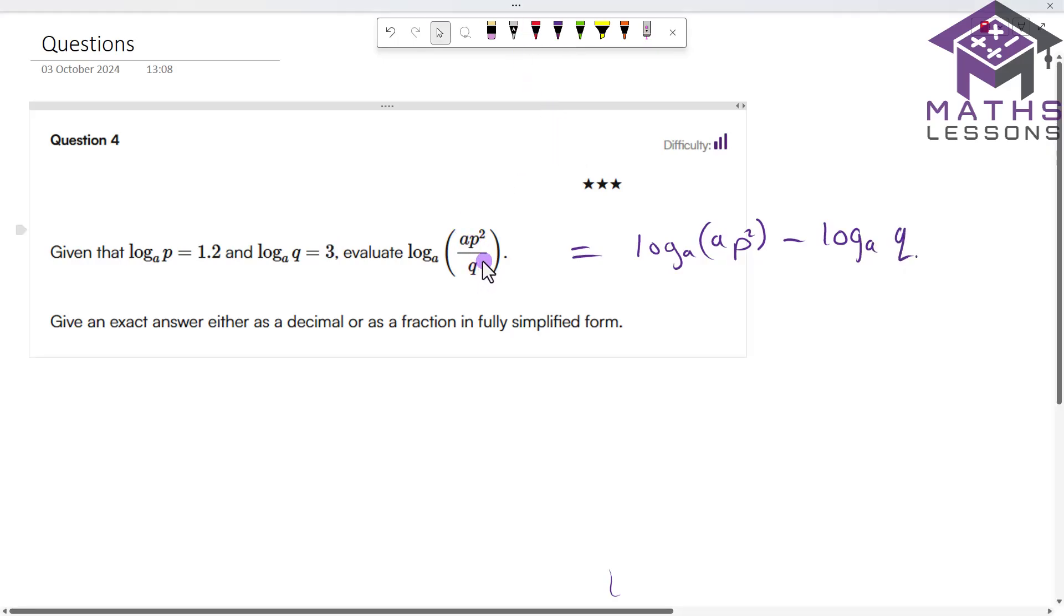When you've got separate these out, you separate the q out by using the minus. So when you bring these together, that minus means you've got the log of a p squared divided by q.